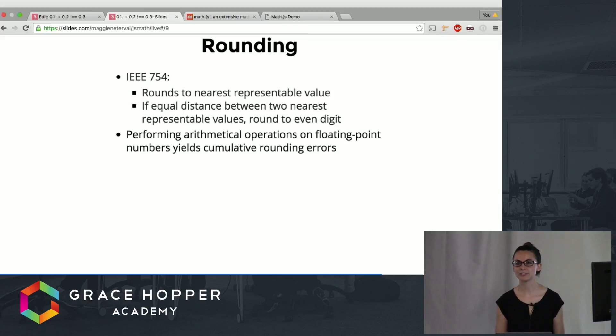So naturally when you're trying to store something that is potentially infinite in a finite amount of space there will be rounding and some rounding issues. So there's a rule in IEEE 754 that if you're rounding between two values that are equidistant you actually round to the even digit.